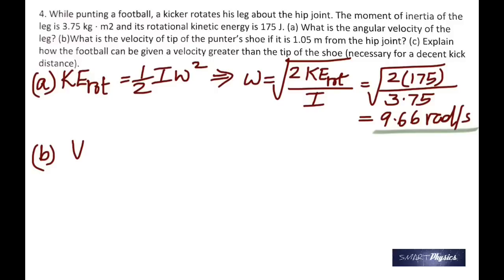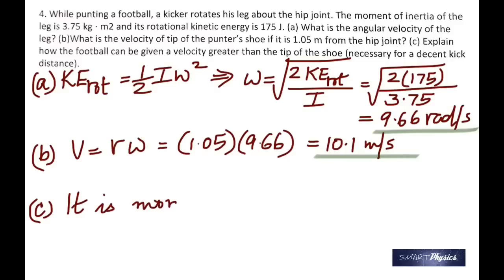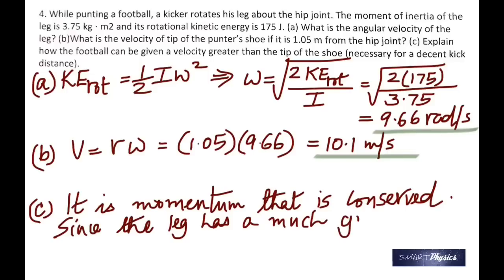In part b, find the velocity of the tip of the punter's shoe if it is 1.05 meters from the hip joint. Linear velocity = rω = 1.05 × 9.66 = 10.1 m/s. Part c: the football can be given a greater velocity than the tip of the shoe because of conservation of linear momentum — since the leg has a much bigger mass than the football, the football must travel at greater speed to conserve momentum.